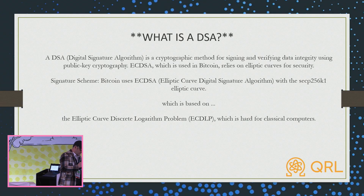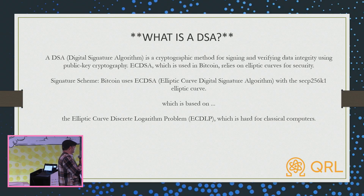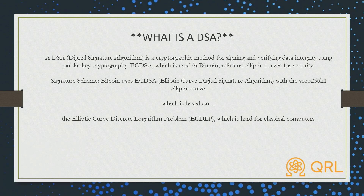What's a DSA? When it comes to post-quantum security in blockchain, the DSA is everything. A DSA is a cryptographic method for signing and verifying data using public key cryptography. ECDSA is the DSA that Bitcoin uses, and it is based on the EC-DLP problem, which is hard for classical computers to solve.